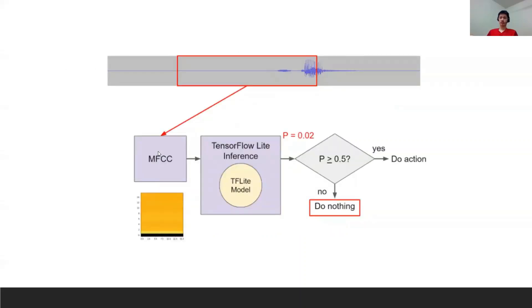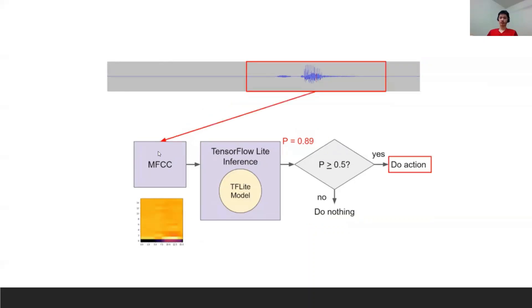This is the sample of unknown command and the result still behaves the same. This is the spectrogram of yes command and the TFLite model gives result of 0.89 which is greater than 0.5. Now the system will do the desired actions.